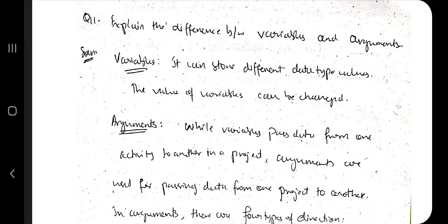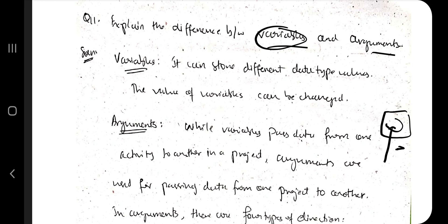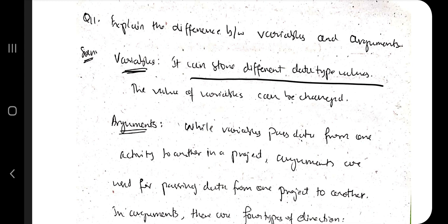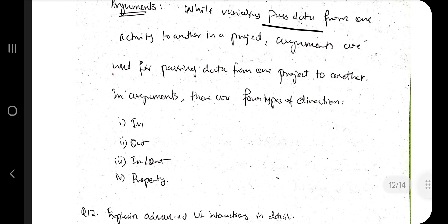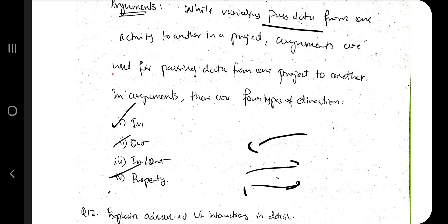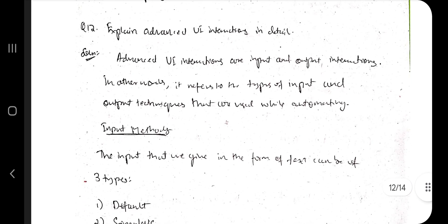The next question is: explain the differences between variables and arguments. Variables store data values — they can hold different data types and their values can be changed. Arguments are used to pass data from one project to another or from one activity to another within the same project. There are four direction types for arguments: In (incoming), Out (outgoing), In/Out (both), and Property (to change a property).